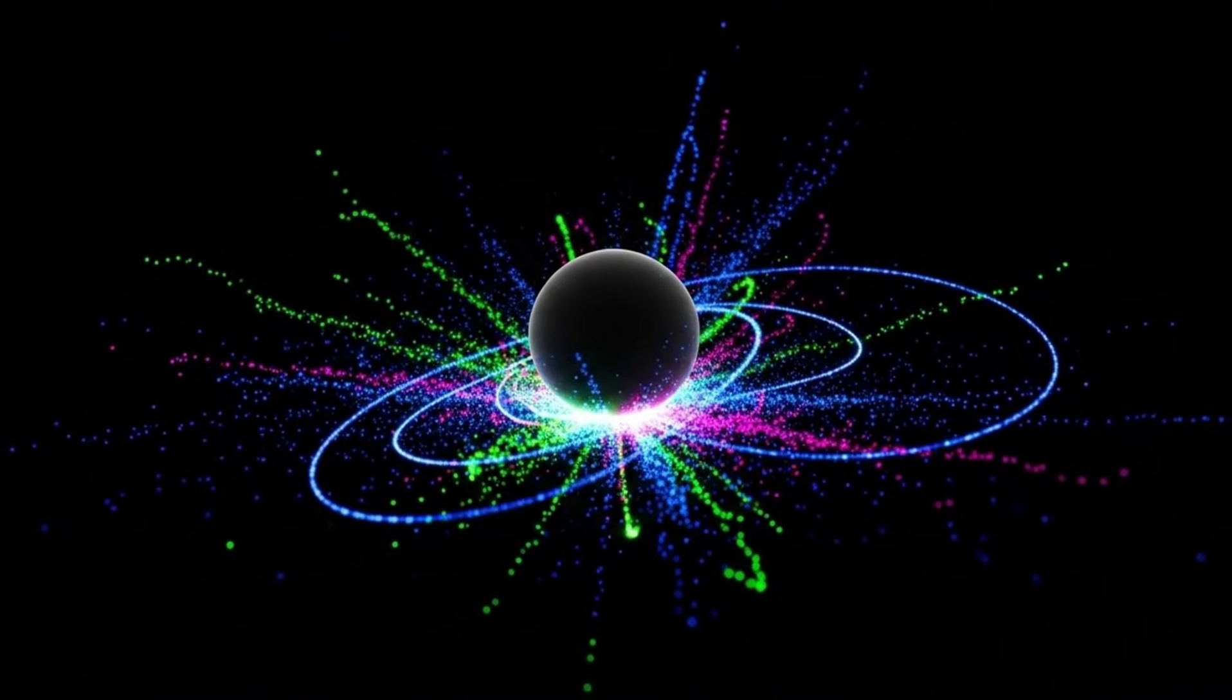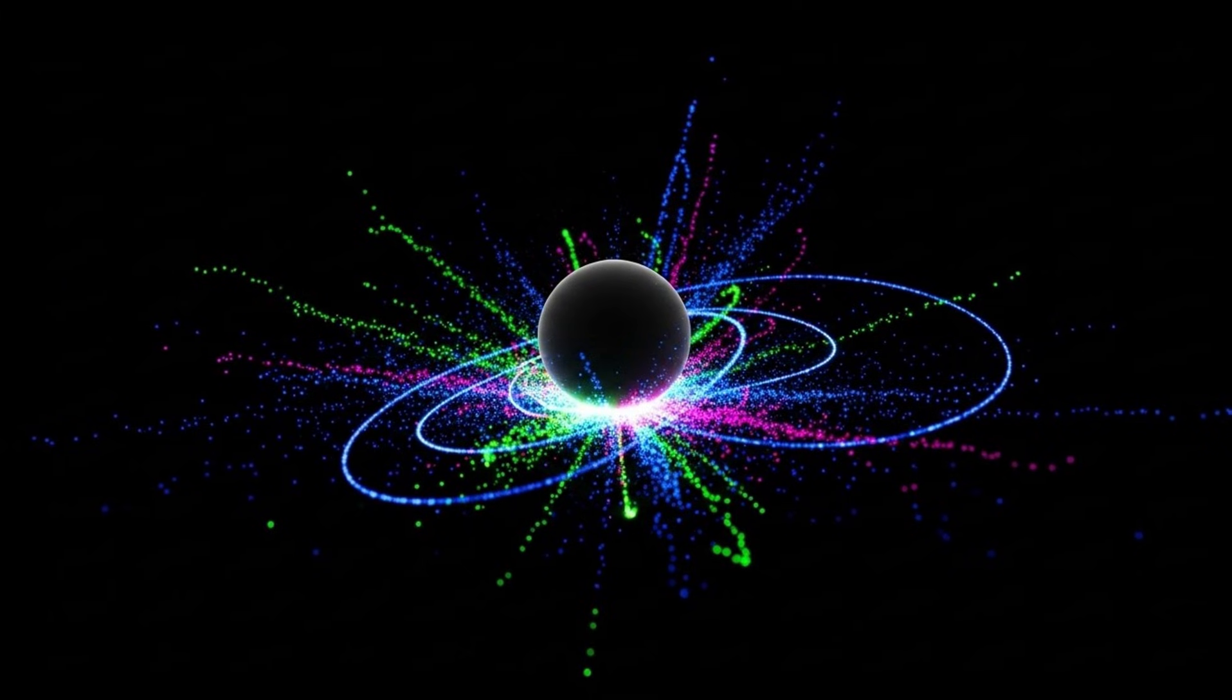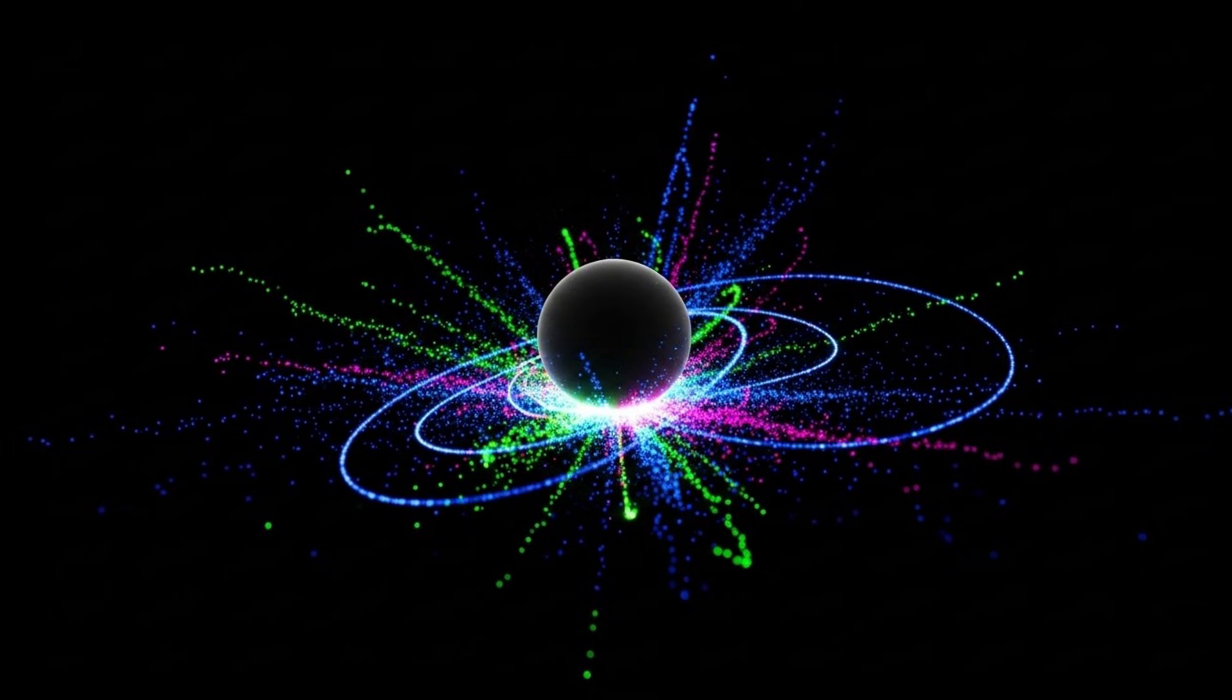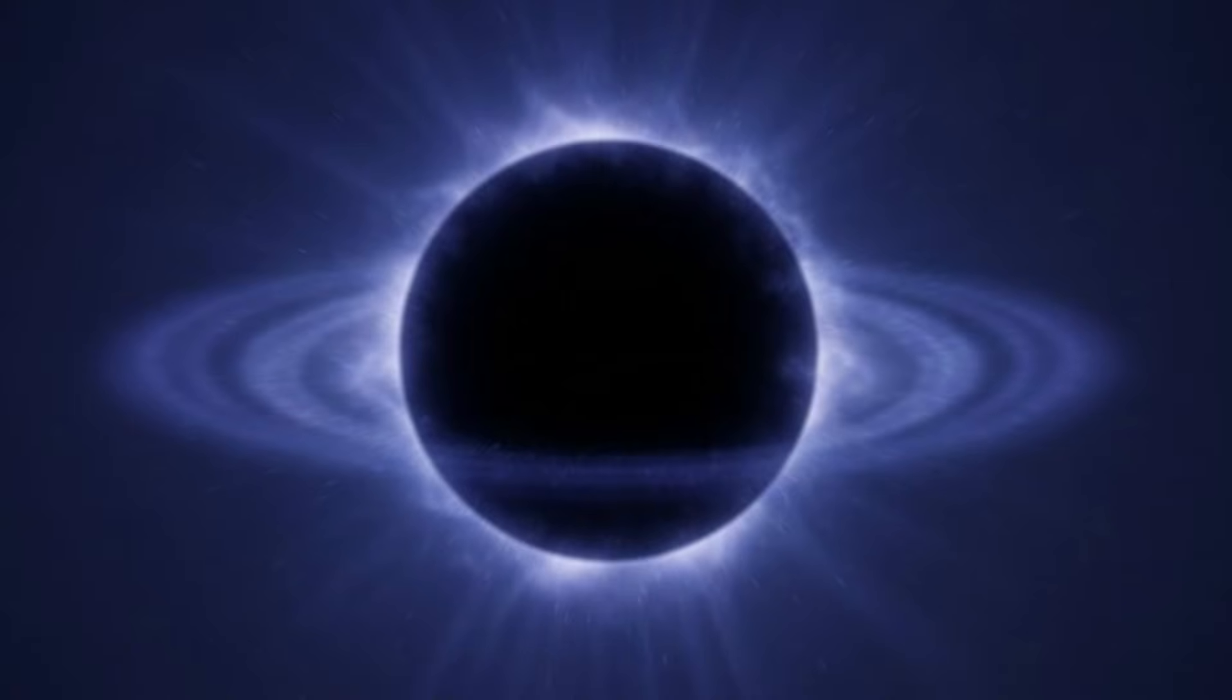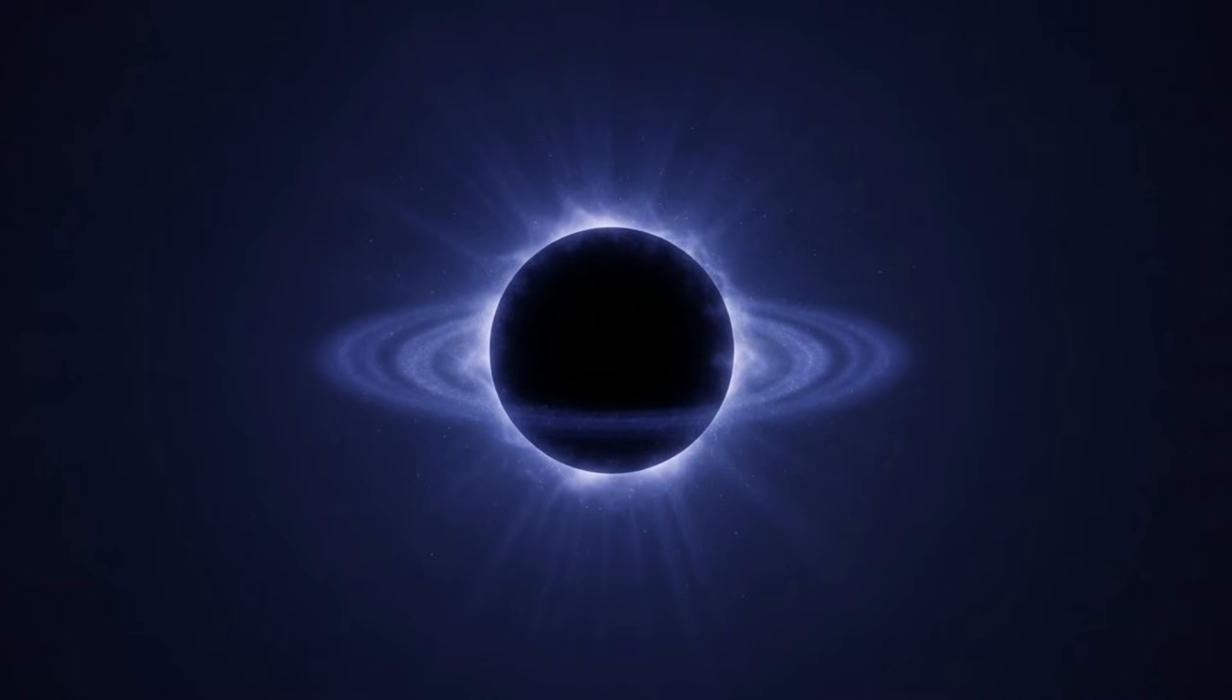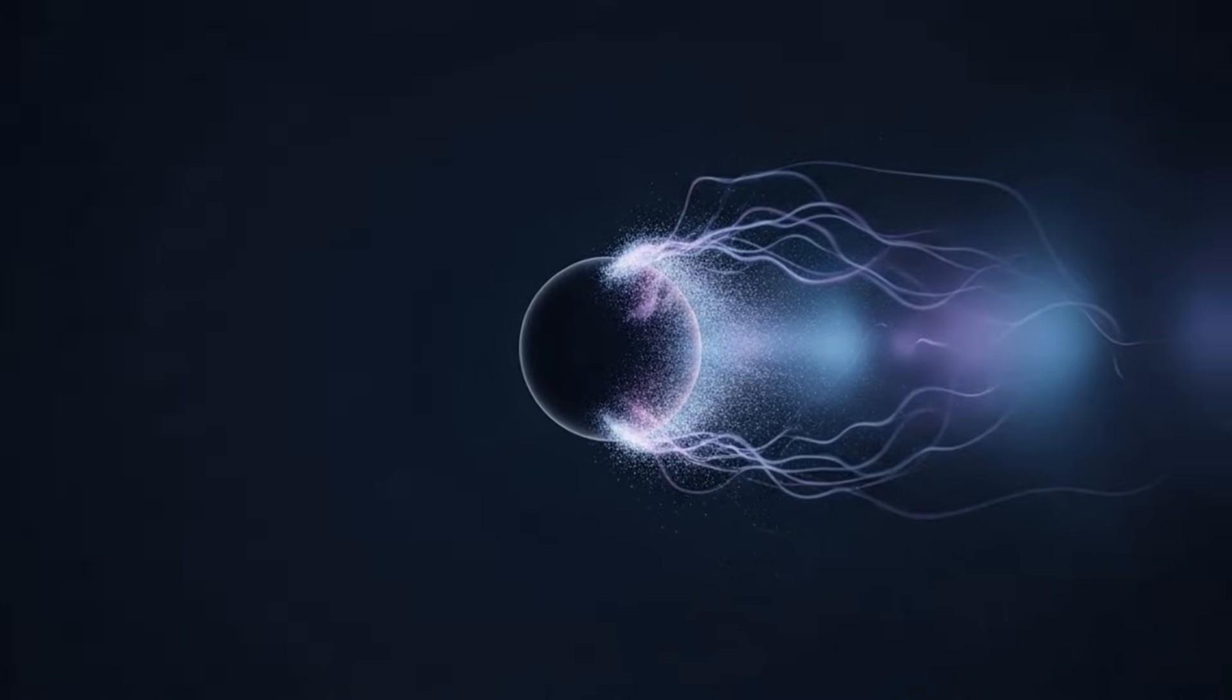And the answer came back consistent, almost eerie in its certainty. A micro black hole had formed. For 1.3 times 10 to the negative 23rd seconds, a singularity existed inside the Atlas detector. Space-time curved inward on itself. The temperature spiked to trillions of degrees. Gravity, for just an instant, became the dominant force. And then it evaporated, just as Hawking predicted.